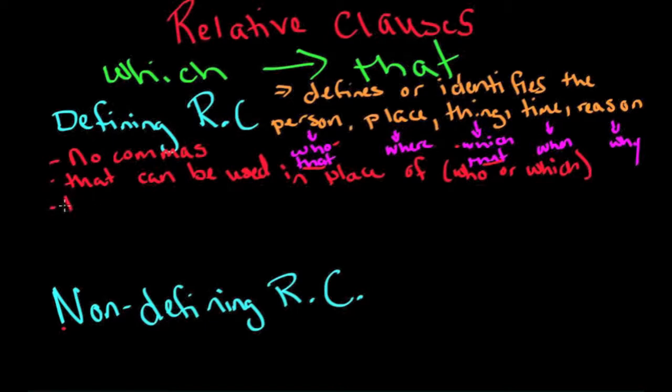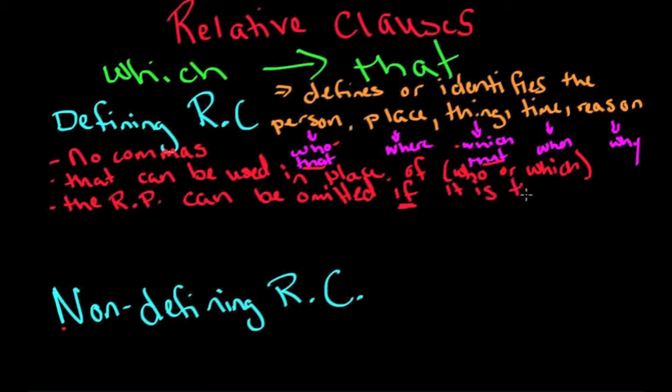And the last thing, the relative pronoun can be omitted, left out or omitted, if it is the object of the verb. Okay, so let's look at two examples.